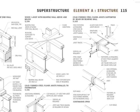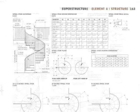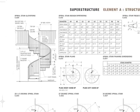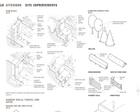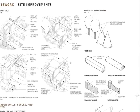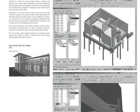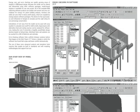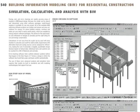We looked at functional building elements, such as the shell of the building, the enclosure, the structure, the interiors, the services, as well as the building site. From there, we looked at materials — basic building materials that may be used in different elements in the building.